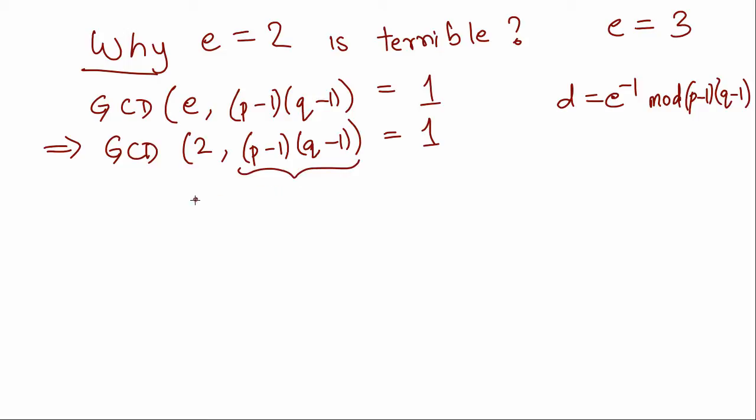Well it tells us that (p-1)(q-1) has to be odd, because if it was even then the GCD of 2 and an even number could not have been 1. So (p-1) times (q-1) is odd. And if the product of two numbers is odd, that means the numbers themselves are odd.